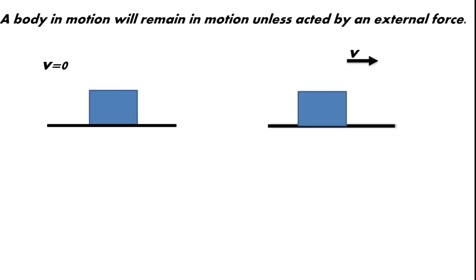A body in motion with constant velocity is still in equilibrium unless acted upon by an external force. For example, if our object is moving to the right and there is friction on the surface, that friction force opposes the sliding. Eventually, this force will cause the body to stop. This illustrates that a body in motion remains in motion unless an external force — such as friction from the surface — acts upon it.